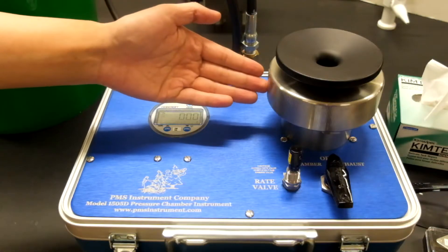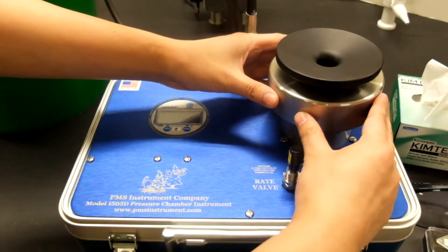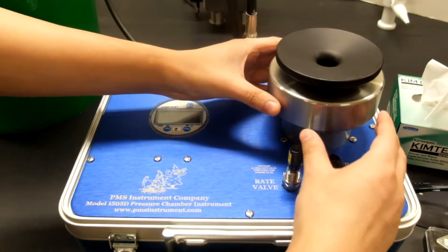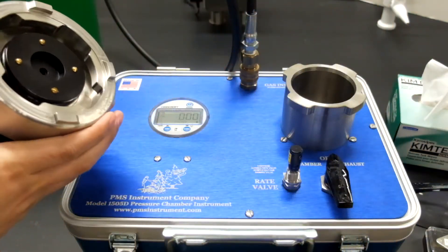Over on the right is the chamber where the leaf can go into. We have the metal lid with the black gasket on top. The lid can lift right up to expose the chamber and the leaf will fit in.